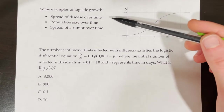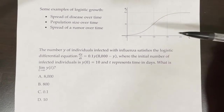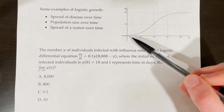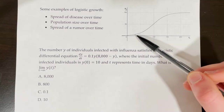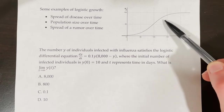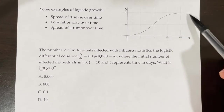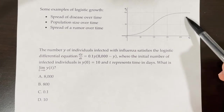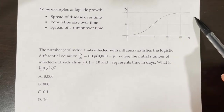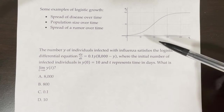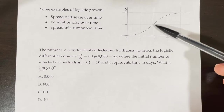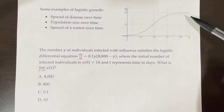Here are some examples of when we might use logistic growth to model a function. First, the spread of disease over time: at the beginning when very few people are infected, the disease won't spread rapidly, but as more individuals become infected, the growth rate rises. However, once many individuals have already had the disease, it levels off at the carrying capacity. Other examples include population size over time or spread of a rumor — all modeled by an S-shaped curve.